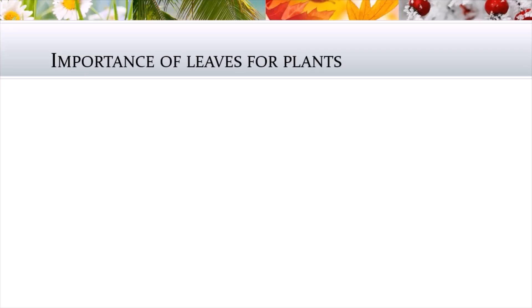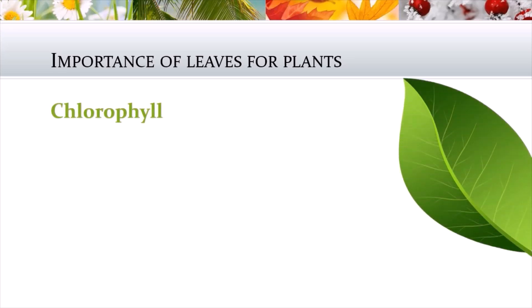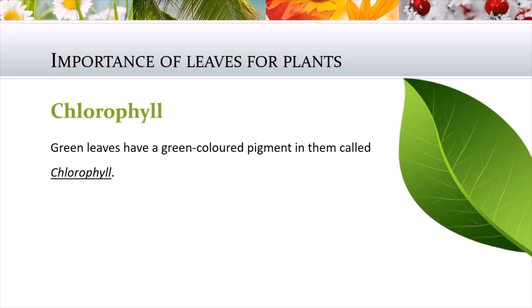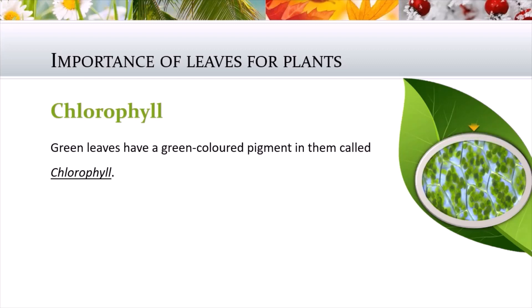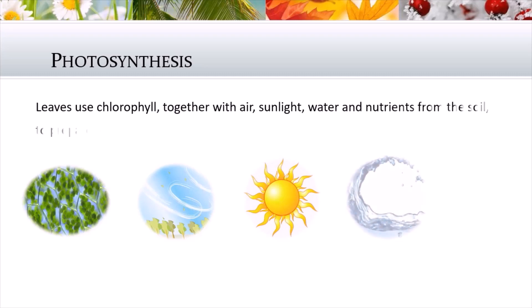Let us look at the importance of leaves for plants — how are the leaves going to help the plants? All the green leaves have a green-colored pigment in them called chlorophyll. The leaves use this chlorophyll together with air, sunlight, water, and nutrients from the soil to prepare their own food.